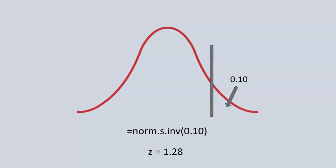Or, you change in your Excel function itself the 0.10 to 0.9. And that would also return this positive 1.28 as a z-score.